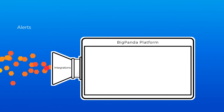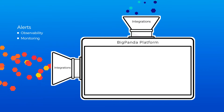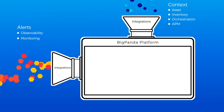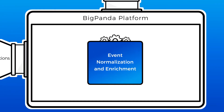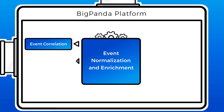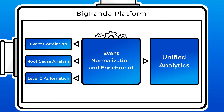BigPanda ingests alerts and events from all your monitoring and observability tools, as well as contextual information from all your operational and topological systems. It then normalizes and enriches your alerts with this information so that your IT ops data is now optimized not only for event correlation, root cause analysis, and automation, but also for reporting and analytics with BigPanda Unified Analytics.